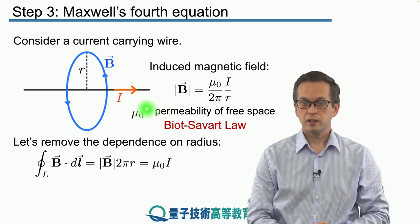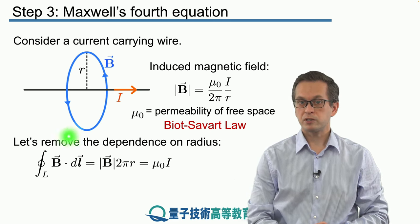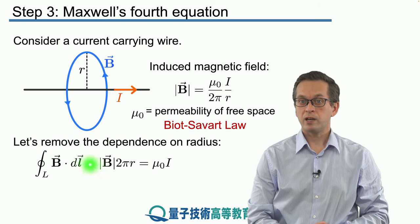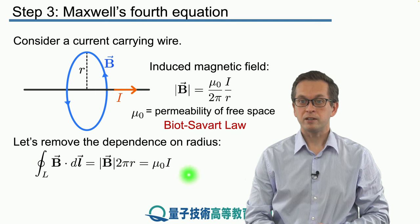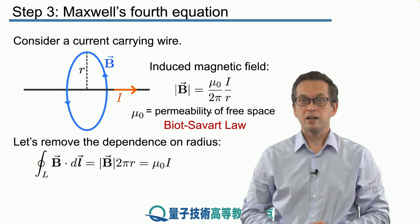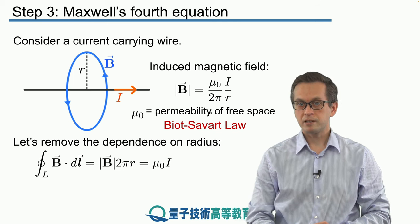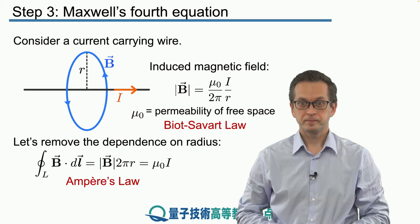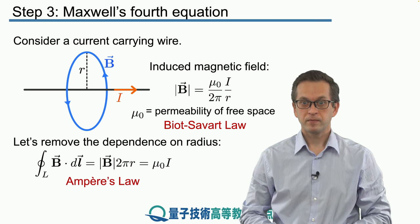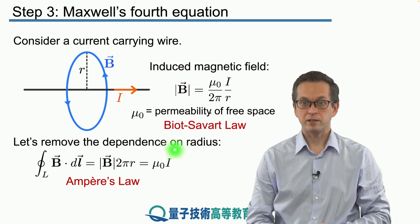We've got a nice expression. Before, in the previous step, we had an expression for E in terms of B. Now we are looking at the line integral of B, but we have it related to the current I. We would like to rewrite this current I in terms of the electric field. This is known as Ampere's law.